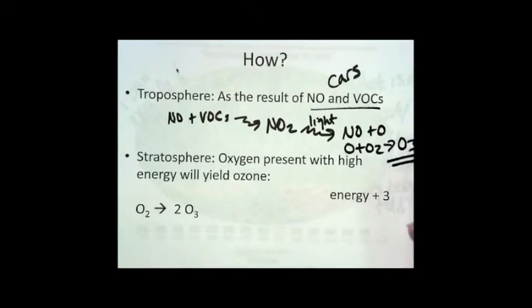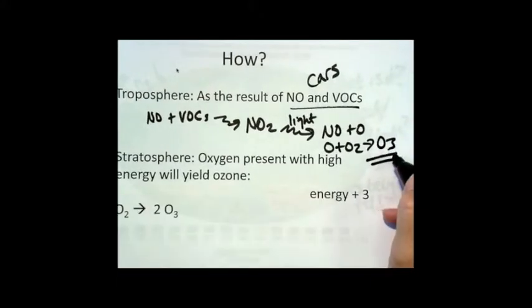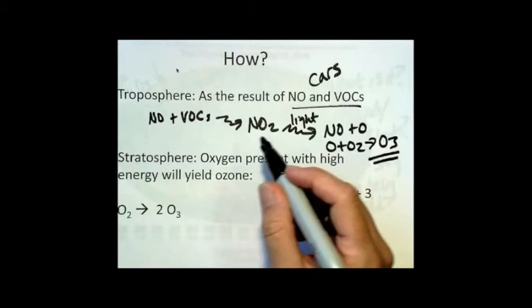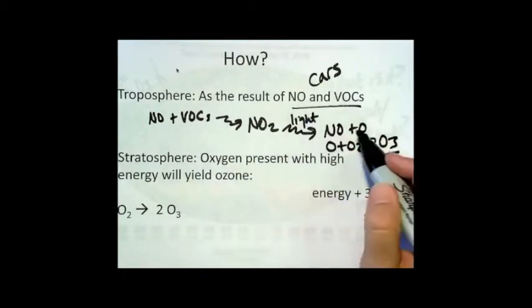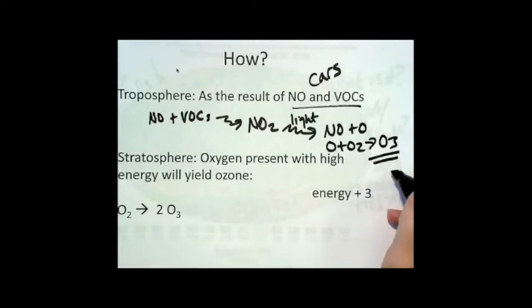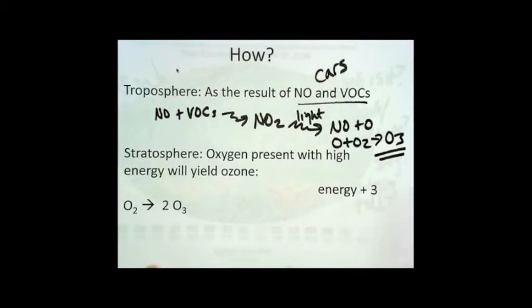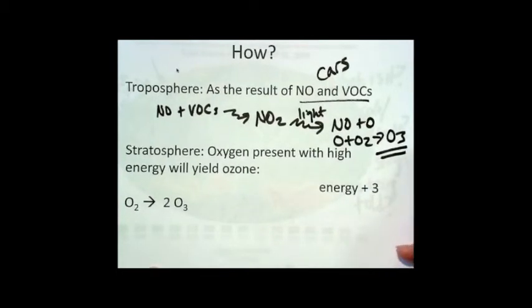So that's why we call ozone, tropospheric ozone, a secondary pollutant, because it's a result of the primary pollutants undergoing a change in the presence of light to produce the ozone. So that's how we end up with that higher concentration of ozone down in the troposphere.